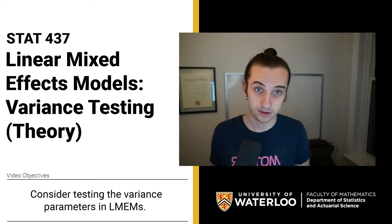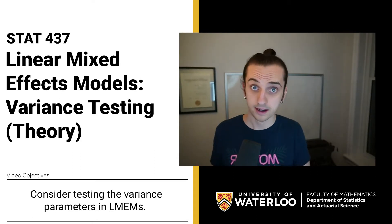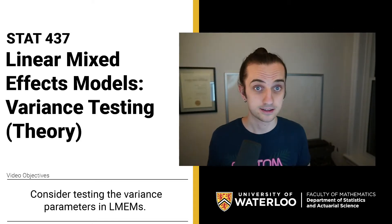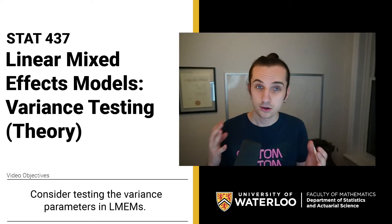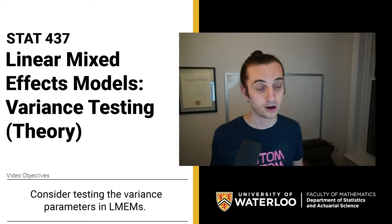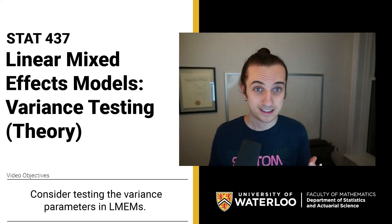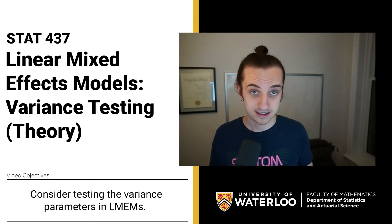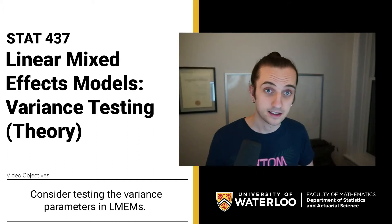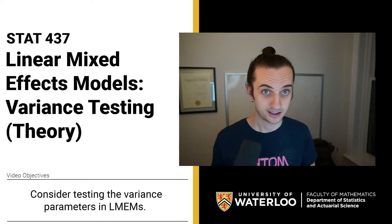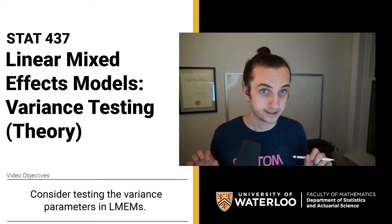Last lecture we talked about the theory and the mathematical derivations of all of these models, and the one before that we discussed the conceptual understanding of linear mixed effects models. So hopefully you're getting quite familiar with these models, but there's one tricky bit we haven't really discussed yet — and it hasn't come up anywhere else in this course — and that's this idea of testing the variance using a likelihood ratio test when the parameter space is constrained.